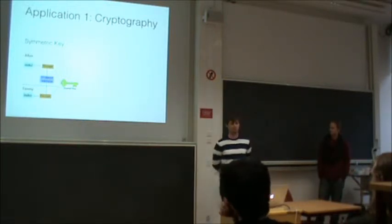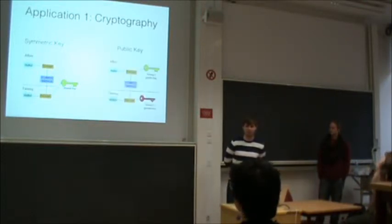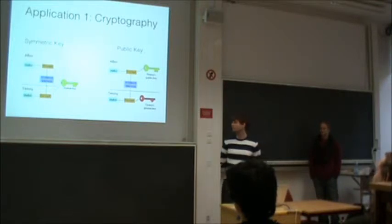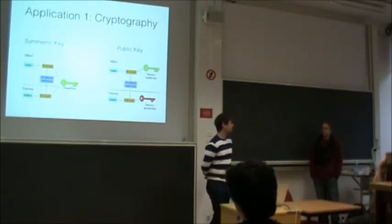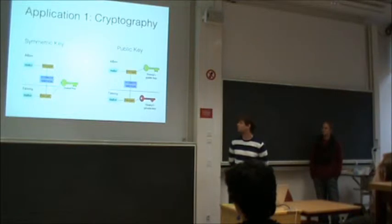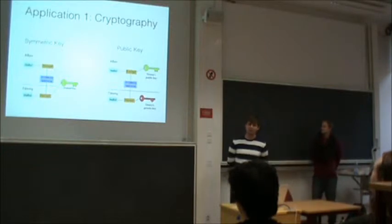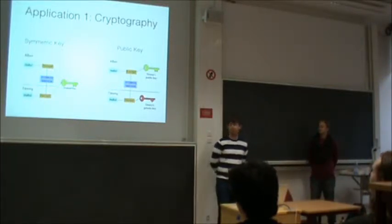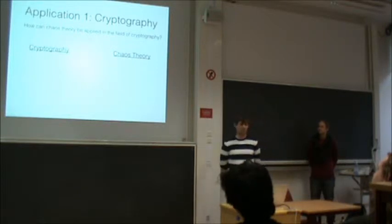There are downsides to symmetric keys: when sending messages to many people you must share many keys, which is a problem for key distribution. In the late 20th century, scientists found a new approach called public key encryption, where the receiver has two keys — one private and one public. In the case of chaos-based cryptography, however, we are mostly using symmetric keys today, because that's how far the field has come.